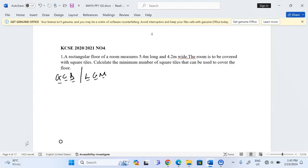In the KCC 2020-2021 exam, Mathematics Paper 1 number 4, the question was: a rectangular floor of a room measures 5.4 meters long and 4.2 meters wide. The room is to be covered with square tiles. Calculate the minimum number of square tiles that can be used to cover the floor.